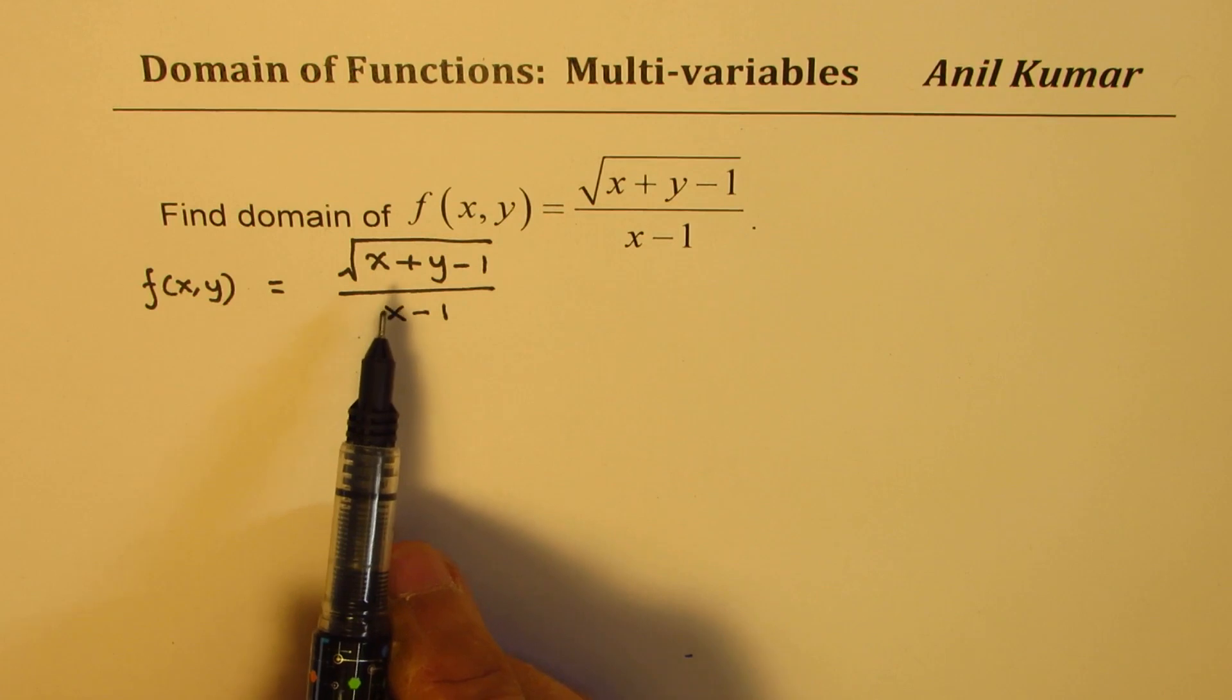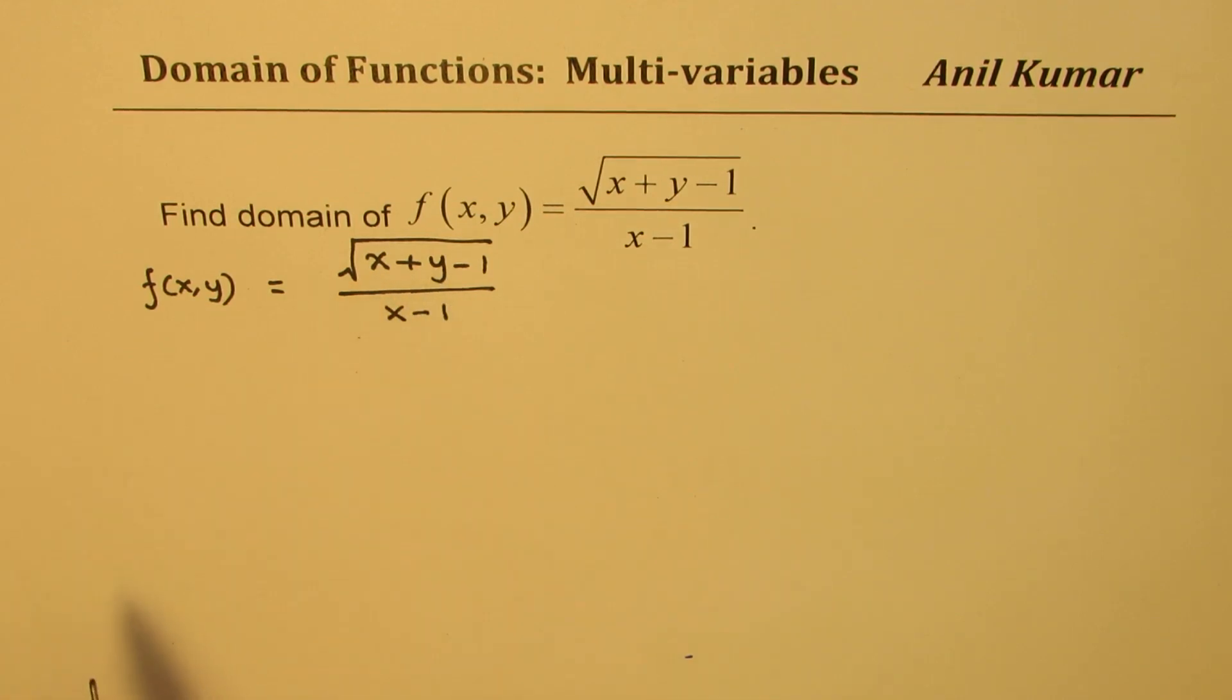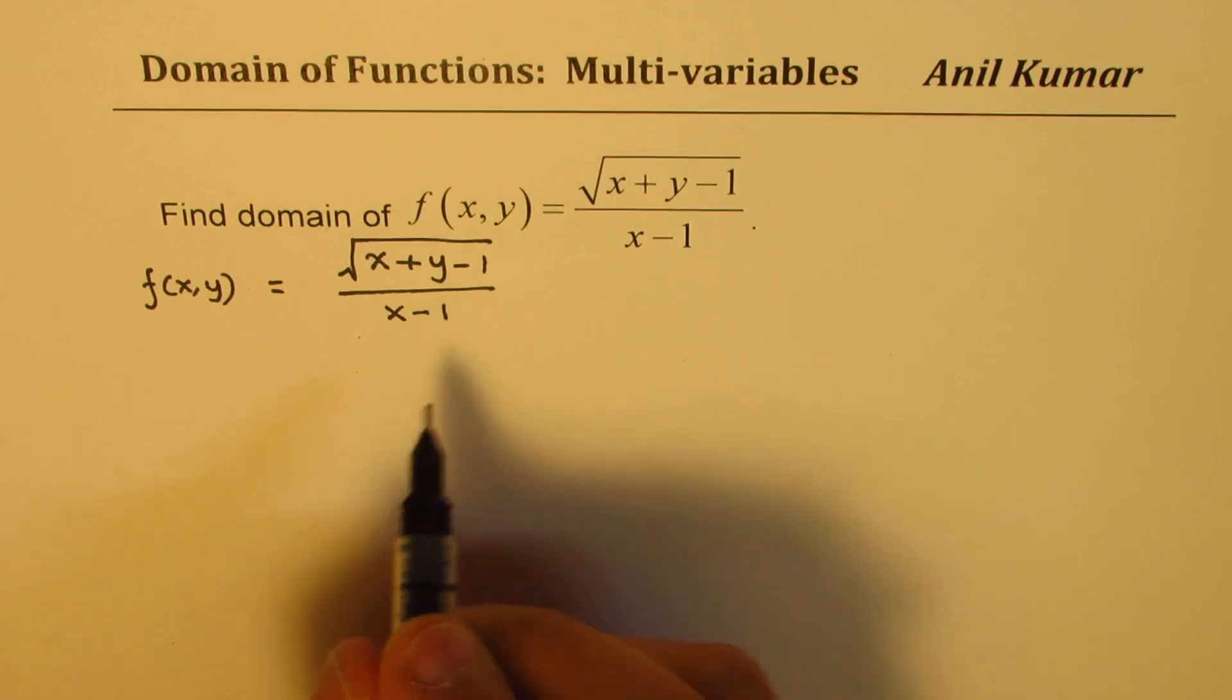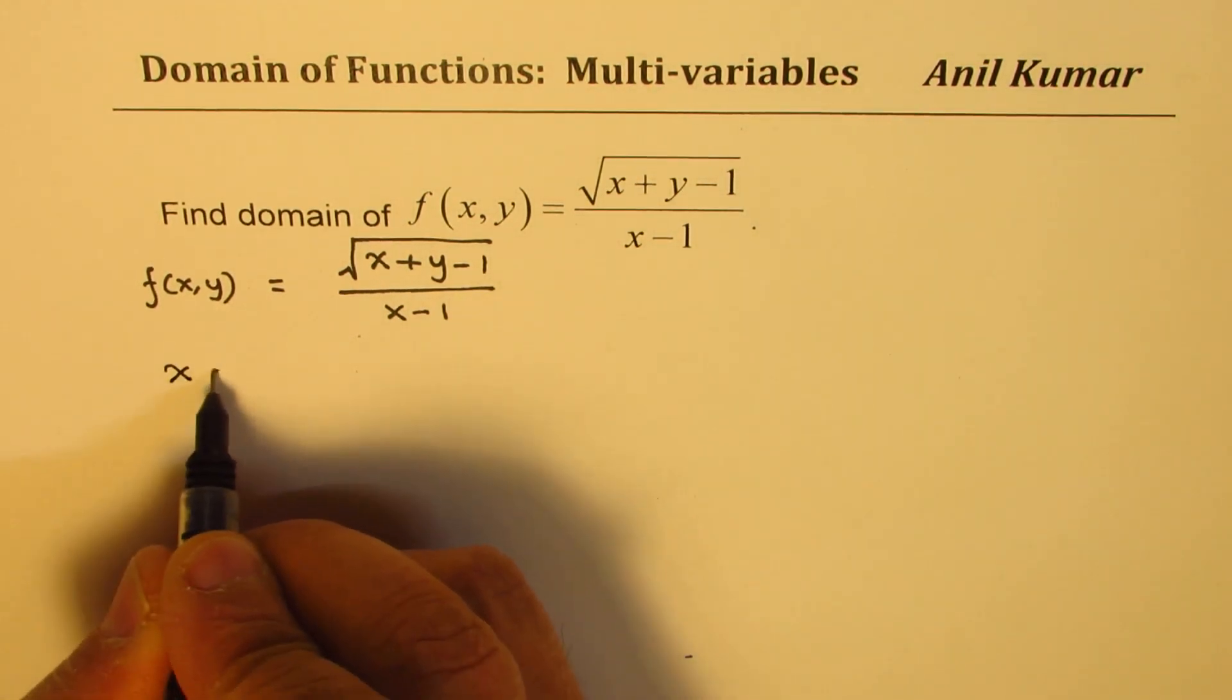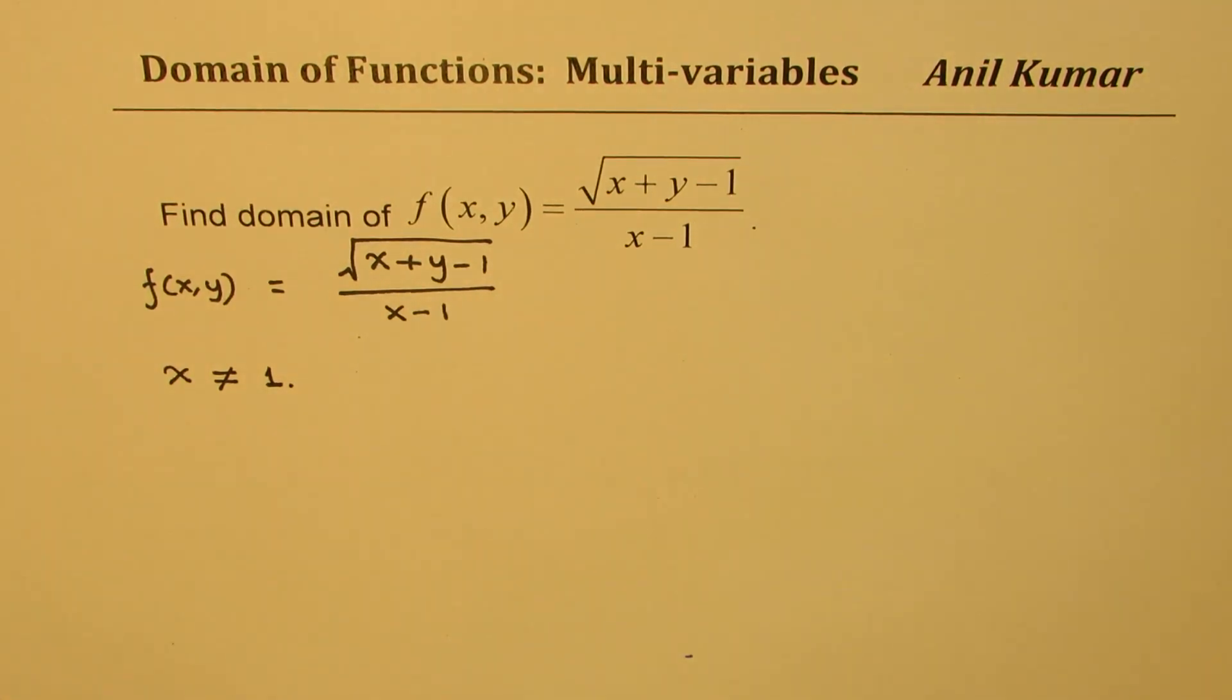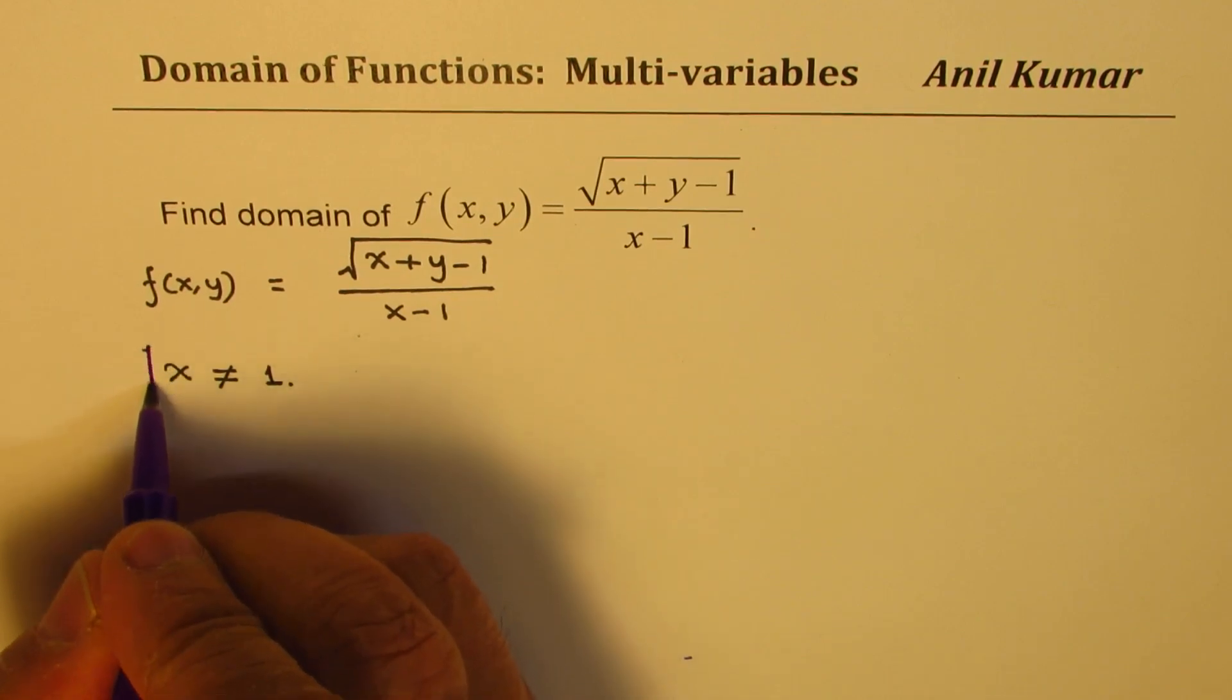Now domain means all the values which x and y both can take. So clearly, denominator cannot be 0. So we get one restriction here that x is not equal to 1. So that is one restriction. So that becomes a part of our restriction on the domain of the function.